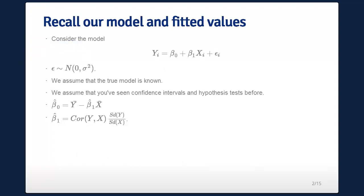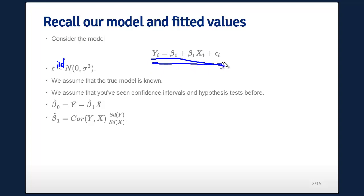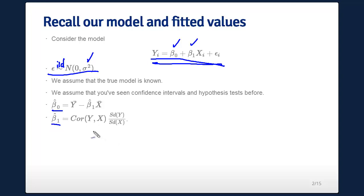Let's take a minute to review our model and how we fit it. Our model is yi = β₀ + β₁xᵢ plus an error term. We assume that the errors are iid normal with mean zero and variance σ², and that the true model formulation is correct. What we're missing is that we don't know β₀, β₁, or σ². The maximum likelihood estimates are β̂₀ = ȳ − β̂₁x̄ and β̂₁ as the correlation times the ratio of the standard deviations.